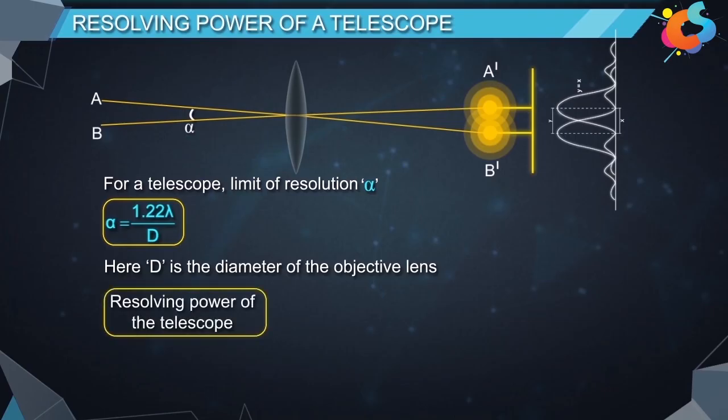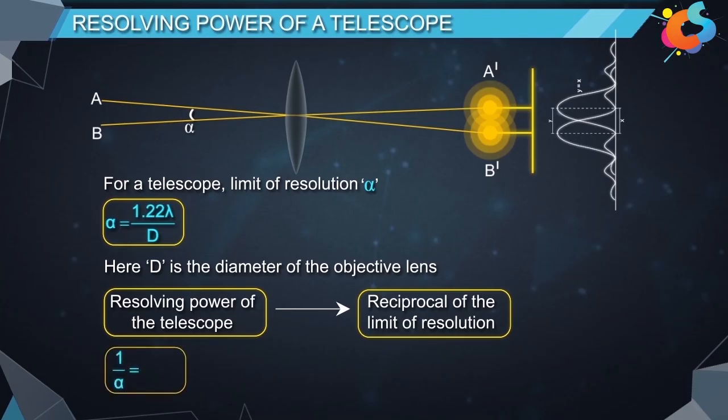The resolving power of the telescope is numerically equal to the reciprocal of the limit of resolution. Therefore, the resolving power of the telescope is given by 1 by alpha is equal to d divided by 1.22 lambda.